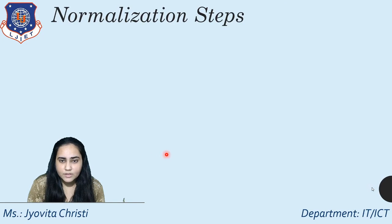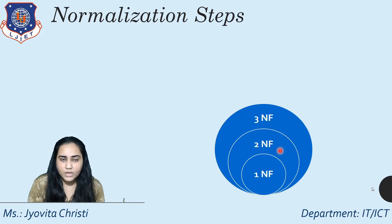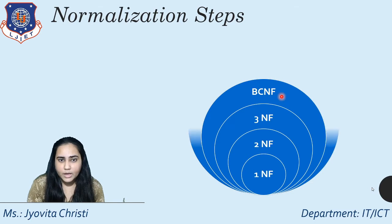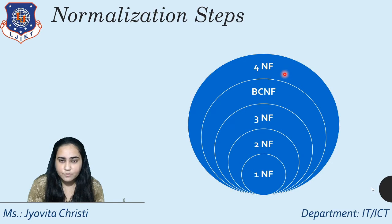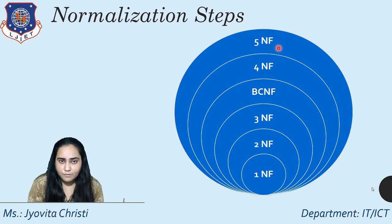Normalization has several steps. The first is 1NF, the first normal form. Then 2NF, the second normal form. Then 3NF, the third normal form. Then BCNF, the Boyce-Codd normal form. Then 4NF, the fourth normal form. And finally 5NF, the fifth normal form. You cannot reach one step without going through the others — to reach 5NF you must first go through 1NF through 4NF.